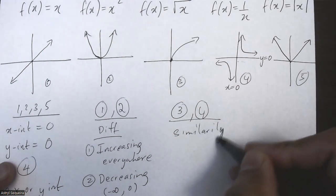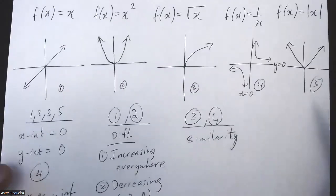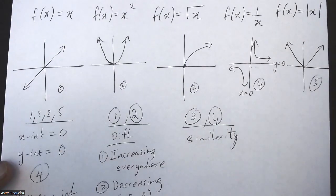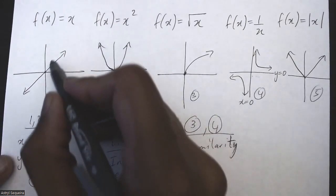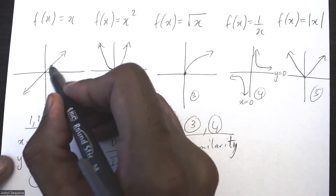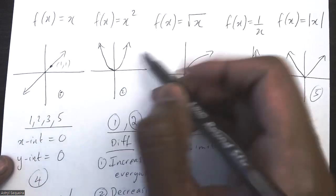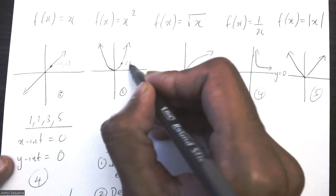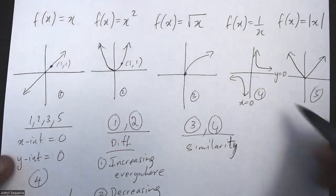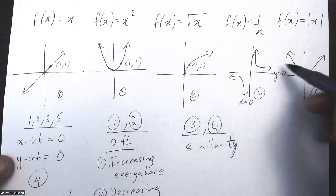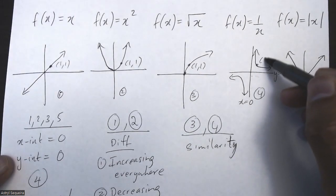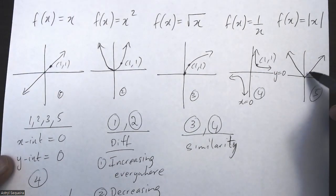But this is a similarity that's there in all of these. All five of these actually have one similarity, at least that I know of, and that's they all pass through the point (1, 1). And that's pretty cool about all the parent functions, that they pass through this point here. I'll explain it through the equations as well, but if you notice they all pass through the point (1, 1).